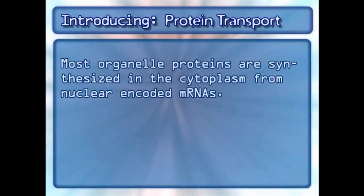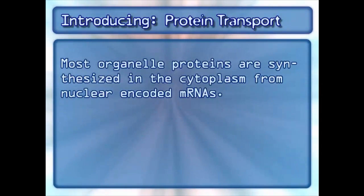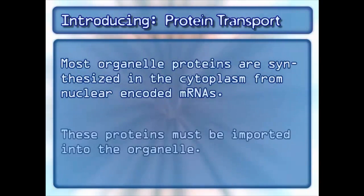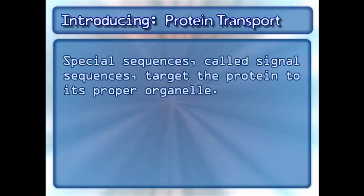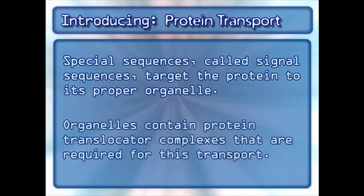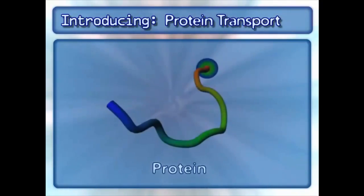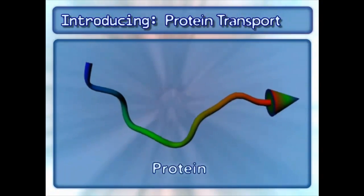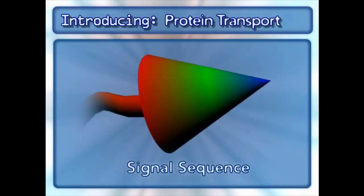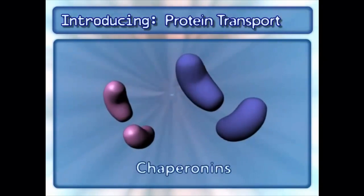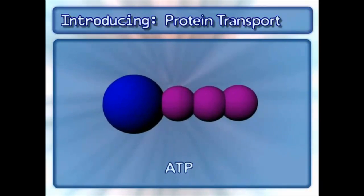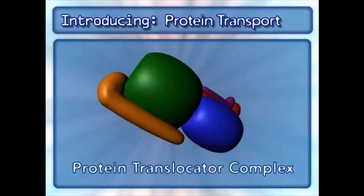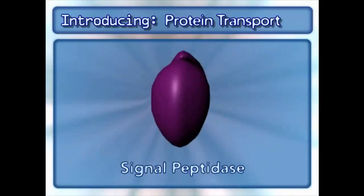Most organelle proteins are synthesized in the cytoplasm from nuclear-encoded mRNAs. These proteins must be imported into the organelle. Special sequences, called signal sequences, target the protein to its proper organelle. Organelles contain protein translocator complexes that are required for this transport. Key players in this process are the protein, a signal sequence, chaperonins, ATP, protein translocator complexes, and signal peptidase.